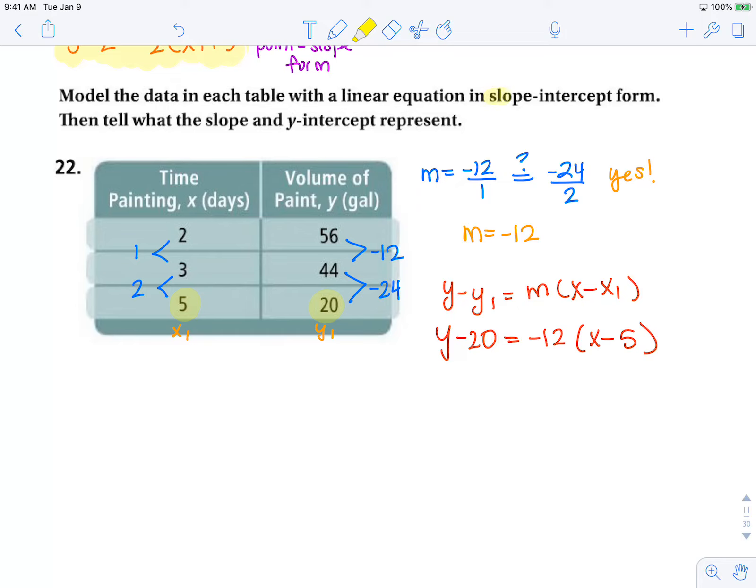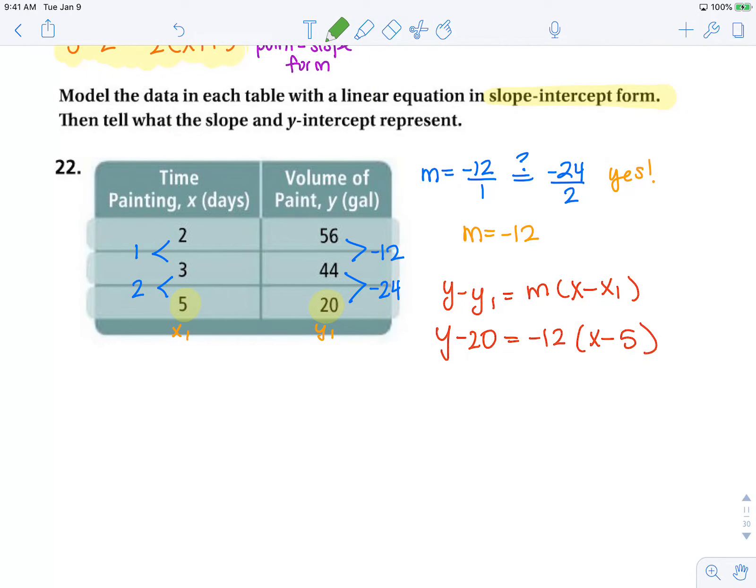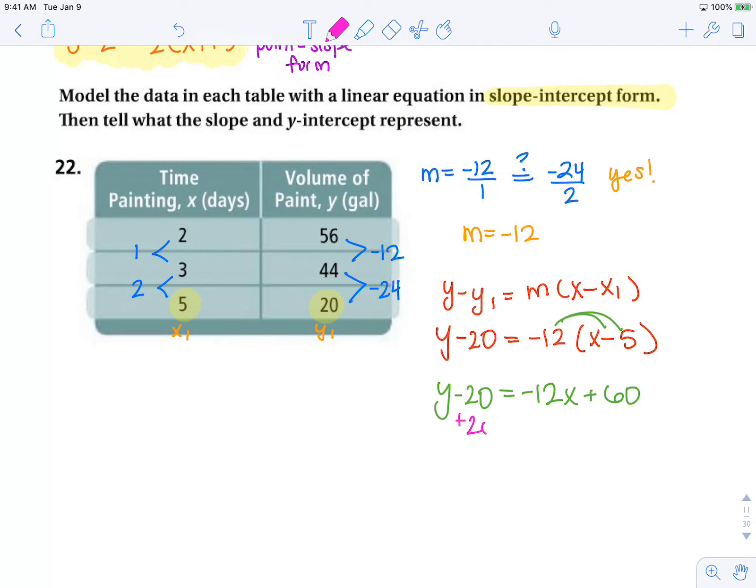But remember, the equation asked for it in slope-intercept form. But we can quickly convert this to slope-intercept form by solving for y. I'll distribute this first. y minus 20 equals negative 12x plus 60. And then I will add 20 to both sides. And we have y equals negative 12x plus 80.